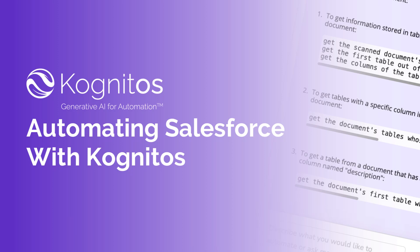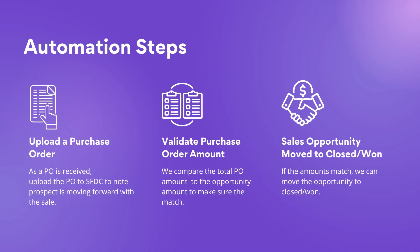In today's video, we'll showcase how easy it is to automate the sales cycle process of marking opportunities as closed won within Salesforce using Cognitos. We will build an automation that allows you to take a purchase order and upload it into Salesforce. Then we'll compare the amount on the purchase order to the amount in the opportunity, and if those two values match, Cognitos can update the status of the opportunity to closed won.